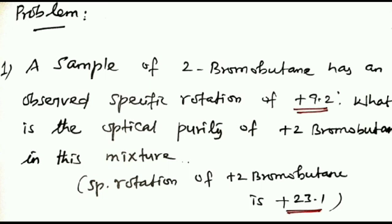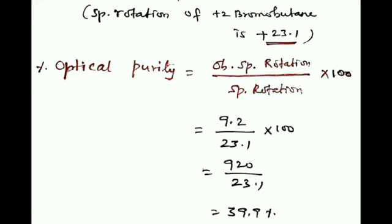Problem: A sample of 2-bromobutane has an observed specific rotation of plus 9.2 degrees. What is the optical purity of plus 2-bromobutane in this mixture? The specific rotation of pure 2-bromobutane is 23.1 degrees. Given: observed specific rotation is 9.2 degrees, specific rotation of pure enantiomer is 23.1 degrees.